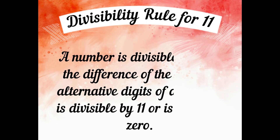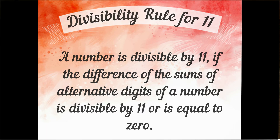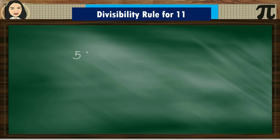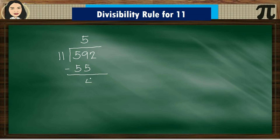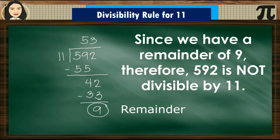Divisibility Rule for 11: A number is divisible by 11 if the difference of the sums of alternate digits is divisible by 11 or is equal to 0. For 592 divided by 11: 59 divided by 11 is 5; 5 times 11 is 55; 59 minus 55 is 4. Bring down 2: 42 divided by 11 is 3; 3 times 11 is 33; 42 minus 33 equals 9. Since we have a remainder of 9, therefore 592 is not divisible by 11.